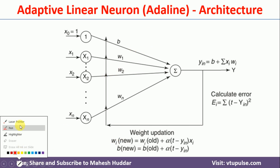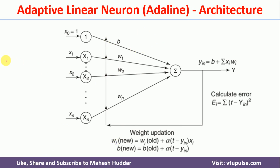This is how the architecture of Adaline looks like. To understand this architecture, I will take three examples — example 1, 2, and 3 — where x1, x2, and xn are the features, and yin is the calculated output. In this architecture, x0 is the bias, which is always equal to 1. x1, x2, and xn are the features for each example. To calculate yin, we first assign some random weights: w1, w2, and wn. These inputs are passed to the summation function using the weights, and yin is calculated as: yin = b + summation of xi * wi, where b is the bias, xi is the input, and wi is the weight.